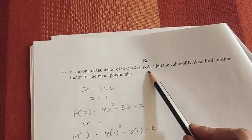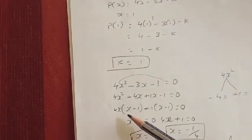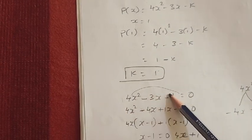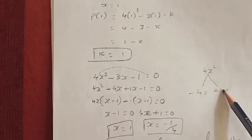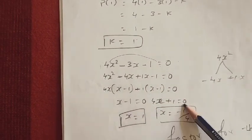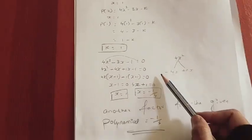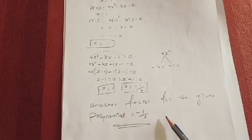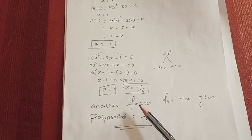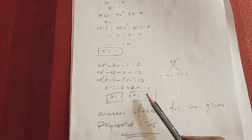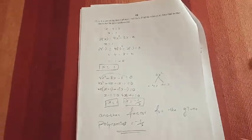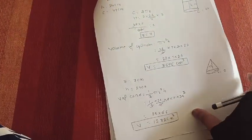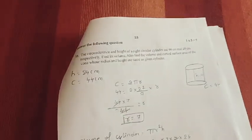Now substitute the k value into the polynomial. It becomes 4x² minus 3x minus 1 equals 0. Factorize it and you will get the other factor. The other factor of the polynomial is minus 1 by 4. One factor was given, and the other is minus 1 by 4. This question carries 4 marks.